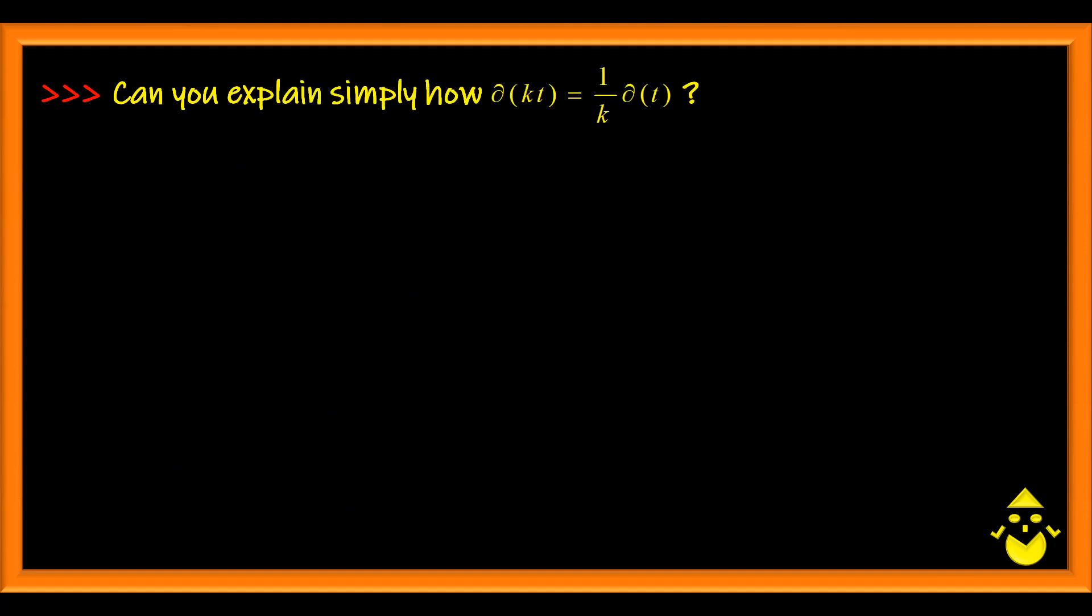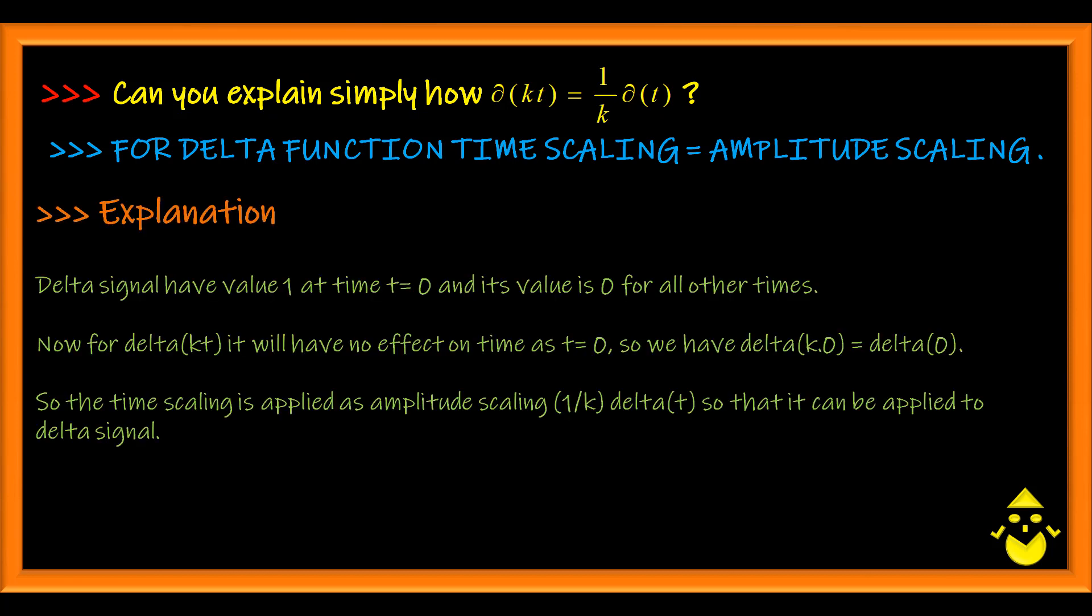Can you simply explain how delta of kt is equal to 1 by k delta of t? Delta of kt is a property called the time scaling property, whereas 1 by k delta of t is amplitude scaling property. For delta function, the time scaling will not have any effect since t is equal to 0 for delta function, which means delta of kt is equal to delta of k times 0, so is equal to delta of 0.